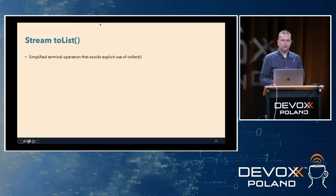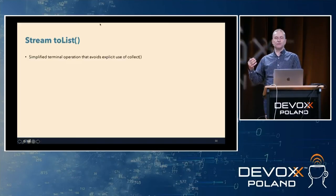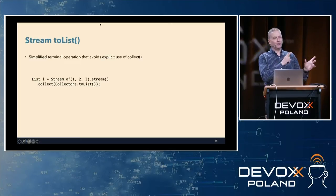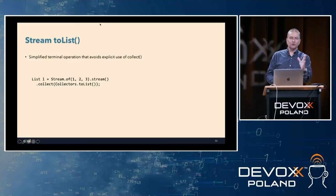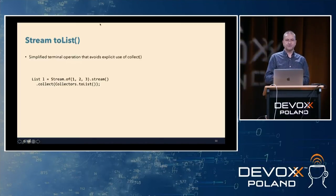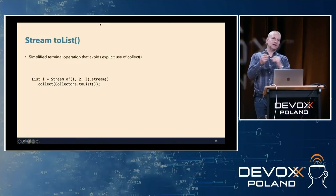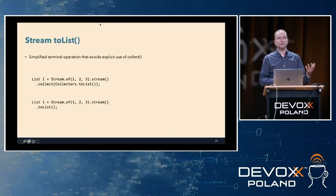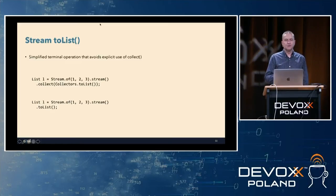Stream.toList is another change to the Streams API — essentially a simplified terminal operation that avoids an explicit call to collect. Rather than stream.of(1, 2, 3).collect(Collectors.toList()), in JDK 16 you simply call .toList() as a new terminal operation that generates the list directly. Very simple change but quite useful.